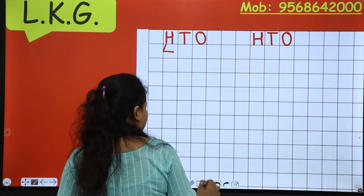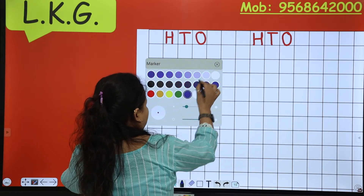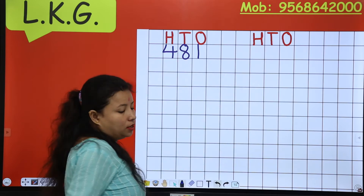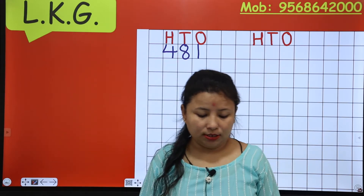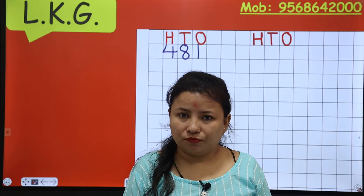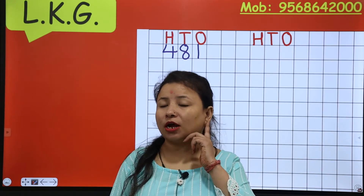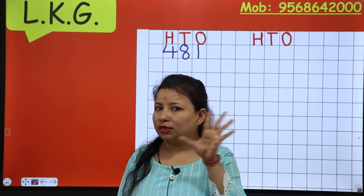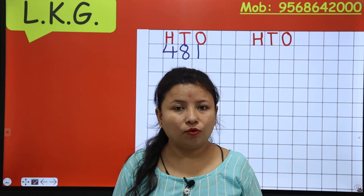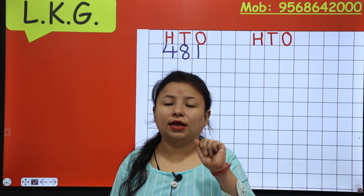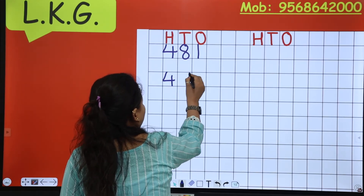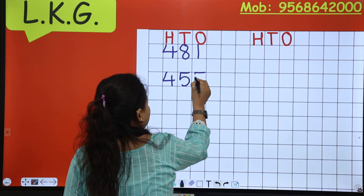Now my next number is 455. 400 it means 4, 50 — the sound of 5 is coming — 50 it means 5, and again 5. So 455: 4, 50 it means 5, and again 5. 455.